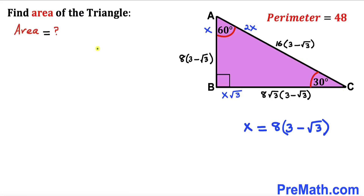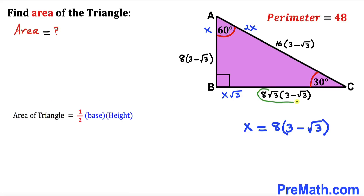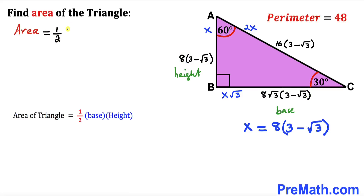Here is our final step: we calculate the area of triangle ABC. Recalling the area formula — area equals one half times base times height — in our case one leg is the base and the other is the height. So the area equals one half times eight times square root of three times the quantity three minus square root of three, times eight times the quantity three minus square root of three.